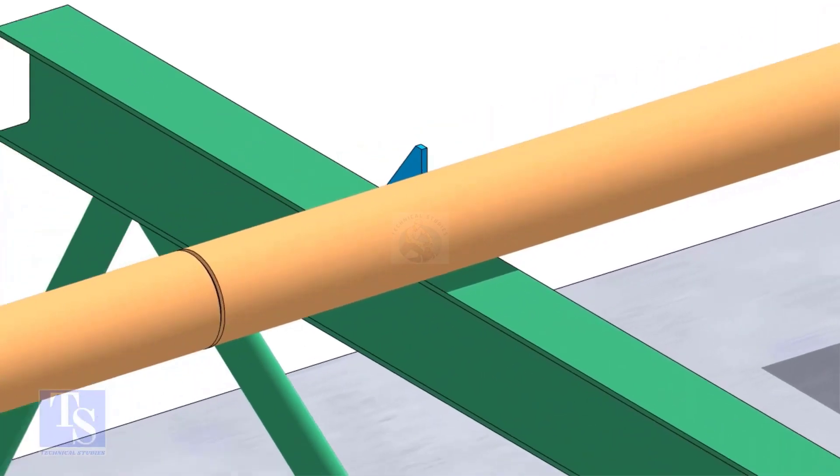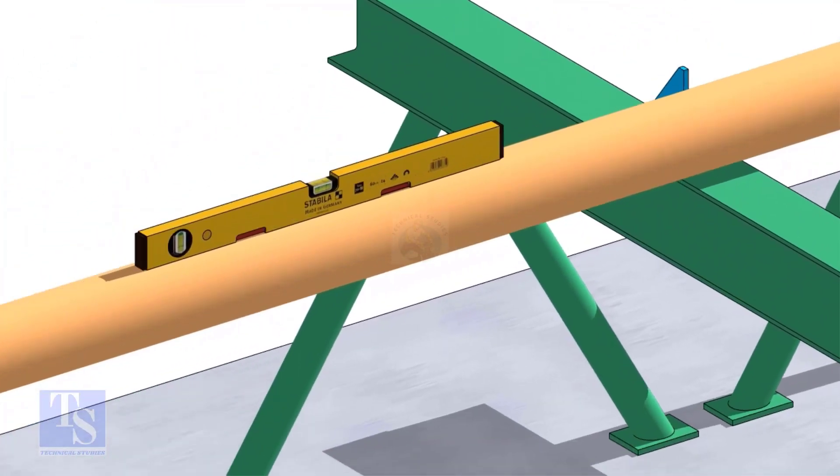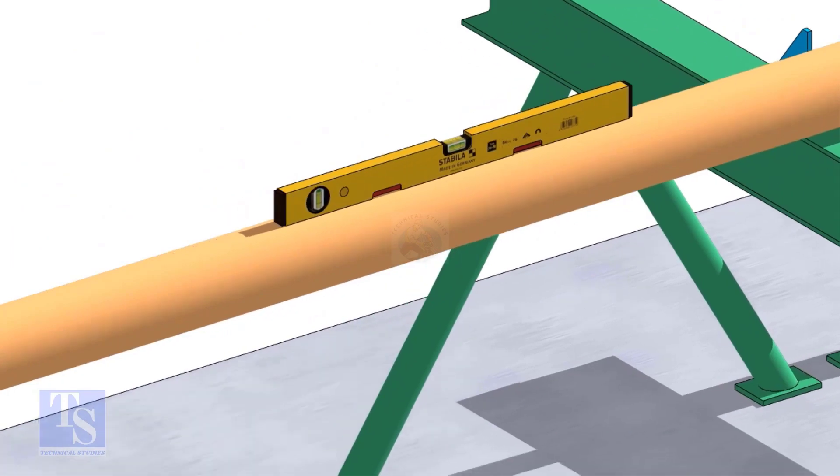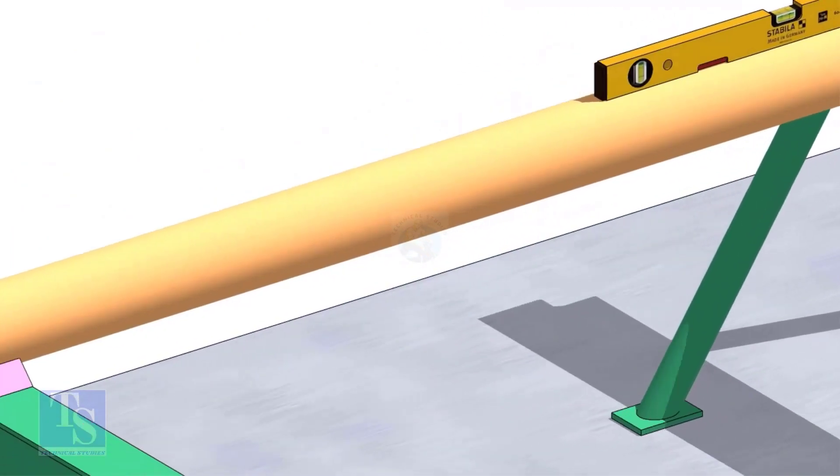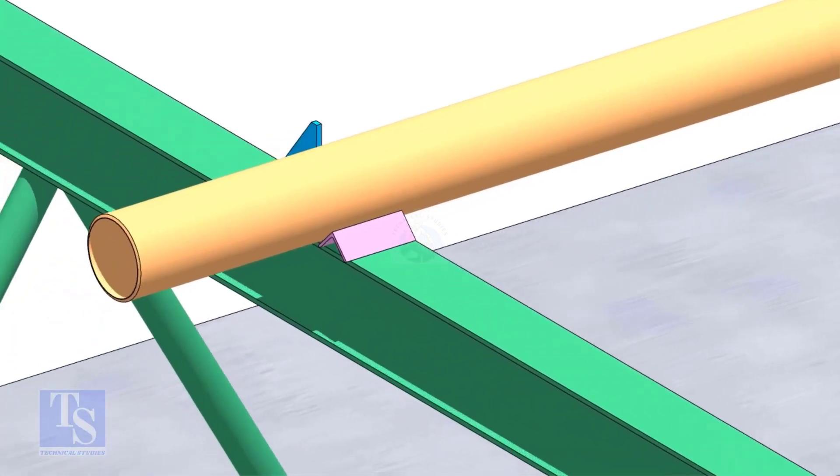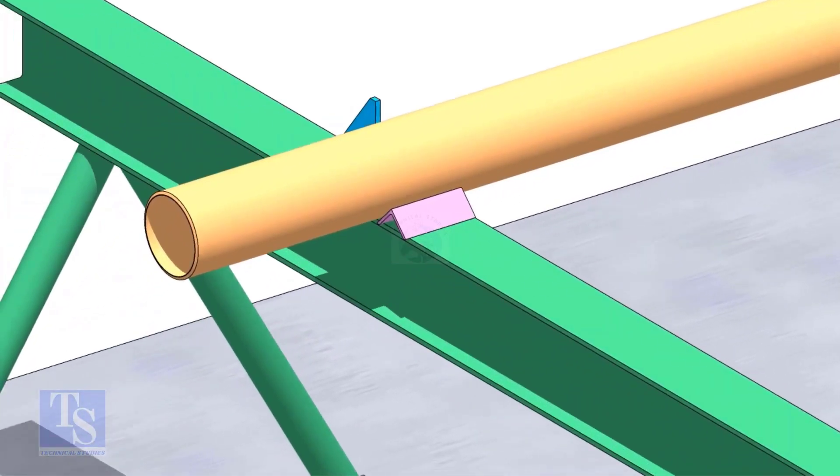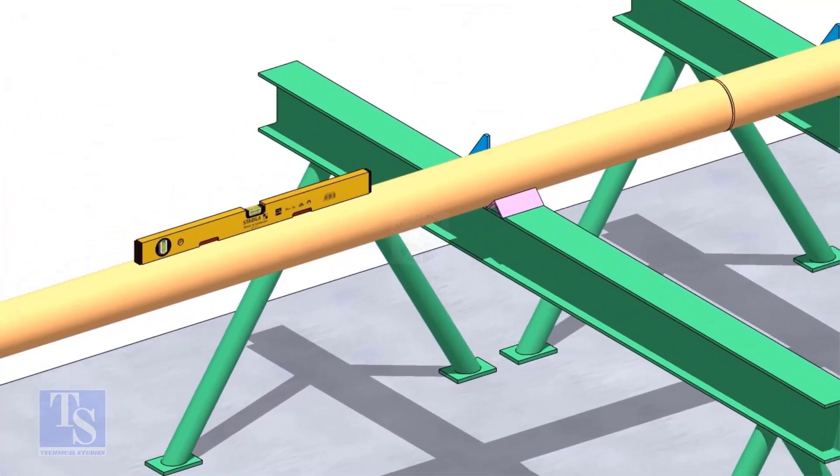You can cross-check the level of the pipes. Arrest the pipes from the other side using wedges or angle stubs.